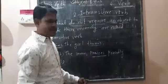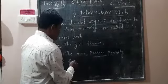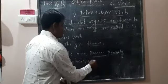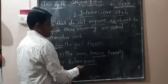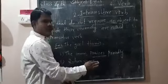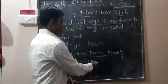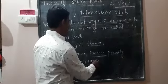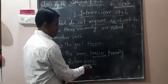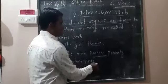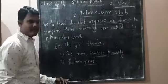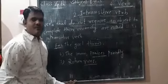Now, 'Rohan runs.' This is the sentence, and 'runs' is the verb. There is no object given here, but this is the clear meaning of the sentence. No object is needed, so it is an example of intransitive verb.